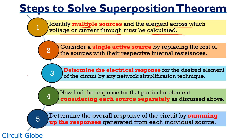Select that particular source and replace all the remaining sources with their respective internal resistances. Then, using any network simplification technique like KVL or KCL, determine the electrical response of the network through the desired element.